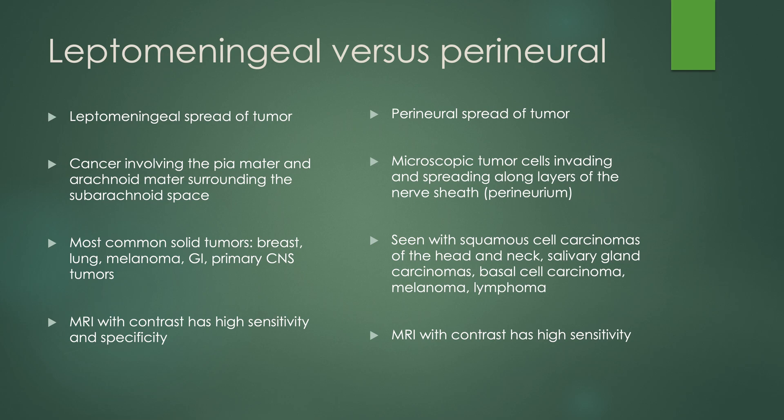Perineural spread of tumor is microscopic tumor cells invading and spreading along layers of the nerve sheath — the perineurium. This can usually be seen with squamous cell carcinomas of the head and neck, with oropharyngeal being the most prevalent. Also salivary gland carcinomas such as mucoepidermoid and adenoid cystic carcinomas. You can see it with some basal cell carcinomas, definitely with melanoma, and lymphoma likes to do whatever it wants.